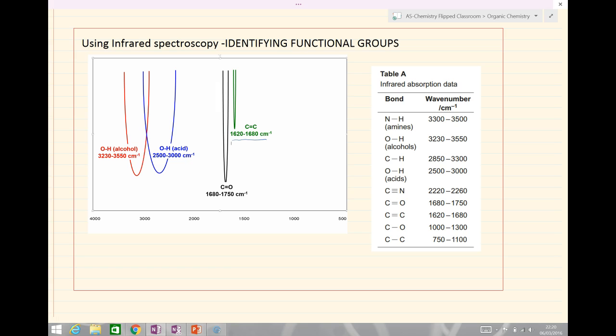The 1680 to 1750 wave numbers is our C=O group, which can result from one of three possible things: either a ketone, an aldehyde, or potentially a carboxylic acid. If we have a carboxylic acid present, we would also have this blue peak which is an OH acid, occurring at 2500 to 3000 wave numbers. So a carboxylic acid would have both the C=O peak and the OH peak.